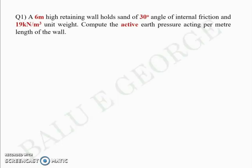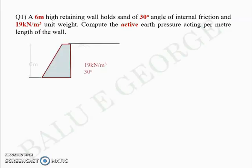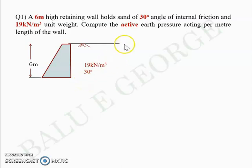The first question is quite simple — the simplest you can expect. You have a retaining wall which is six meters high; it holds sand with angle of internal friction phi = 30 degrees and unit weight gamma = 19 kN/m³. You are asked to compute the active earth pressure acting per meter length of the wall. Since it's cohesionless soil and no water table is present, the pressure distribution diagram starts at zero and has a linear distribution downward with depth.